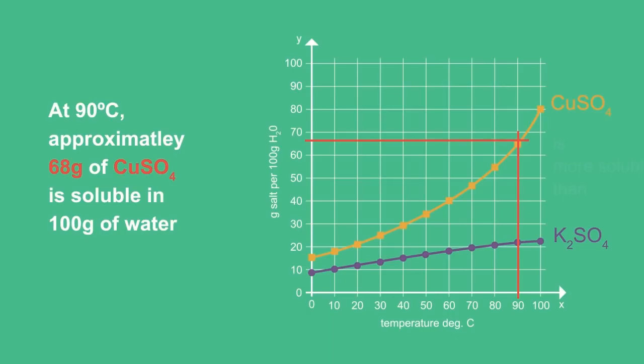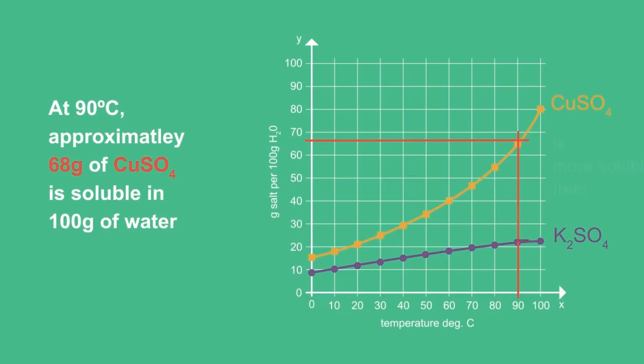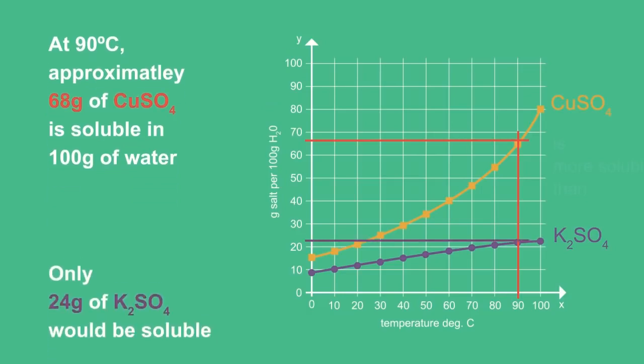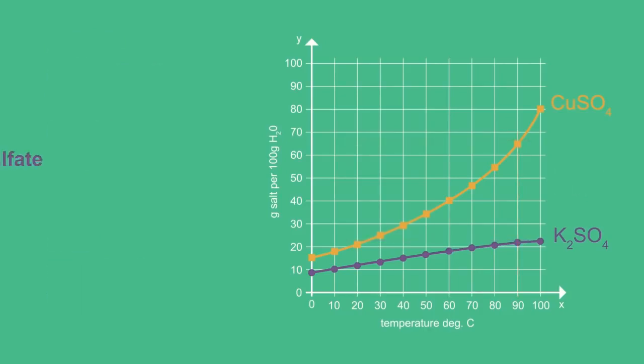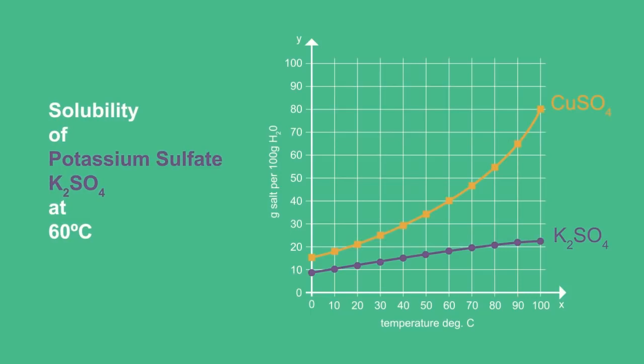To compare, at the same temperature, only 24 grams of potassium sulfate would be soluble in water. Using the provided graph, try to find the solubility of potassium sulfate at 60 degrees Celsius.